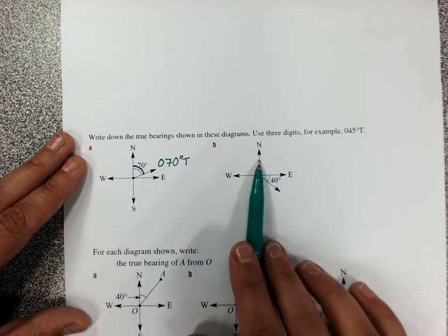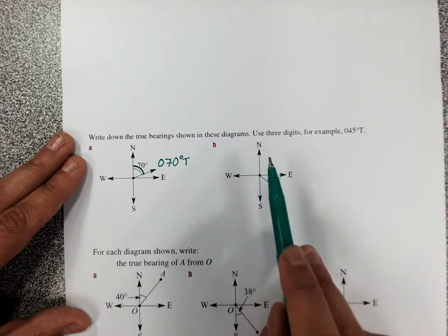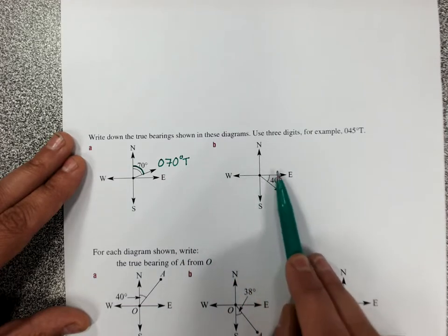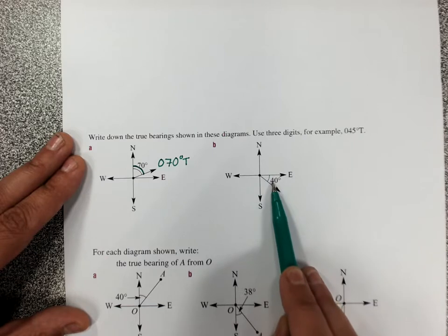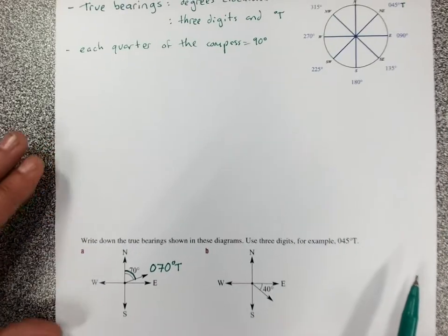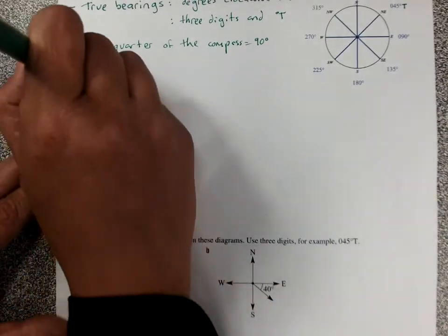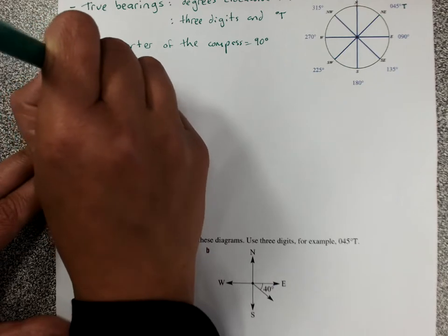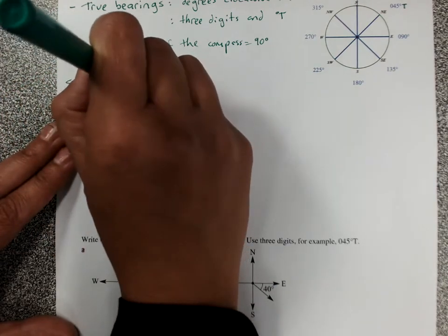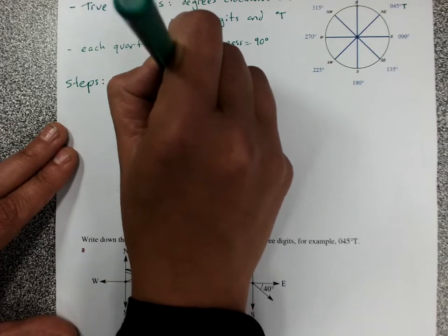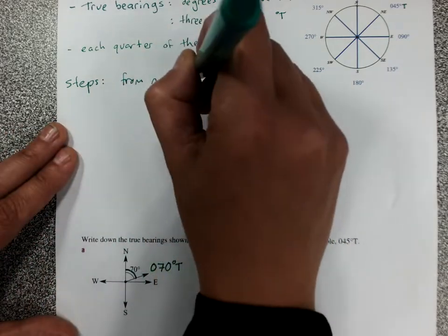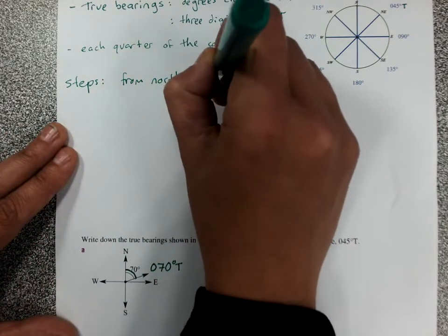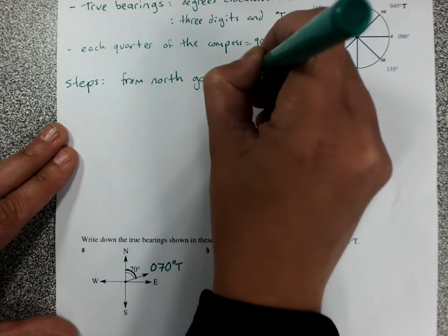But for some of them we'll have to add on or take away angles to get the actual angle clockwise from north. So we do it like this. Our steps are: from north, go clockwise to the direction line or the bearing line.